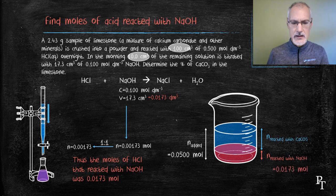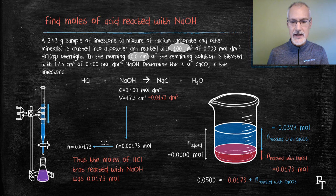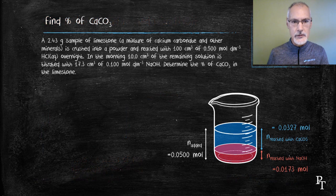With knowledge of the moles I added and the moles that actually reacted with the NaOH, I can subtract those to determine the actual amount that reacted with the calcium carbonate: 0.0327 moles. This is the number I need to return back to my original equation — the number of moles that actually reacted with the calcium carbonate.